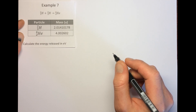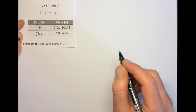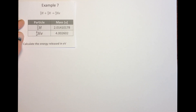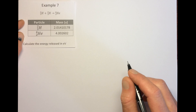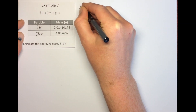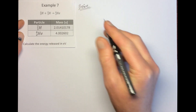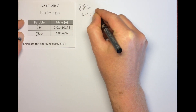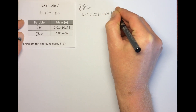It doesn't actually matter, and I'll explain why. First, we need to calculate the mass before and the mass afterwards. The mass of the reactants is equal to two times 2.0141017 8 u.